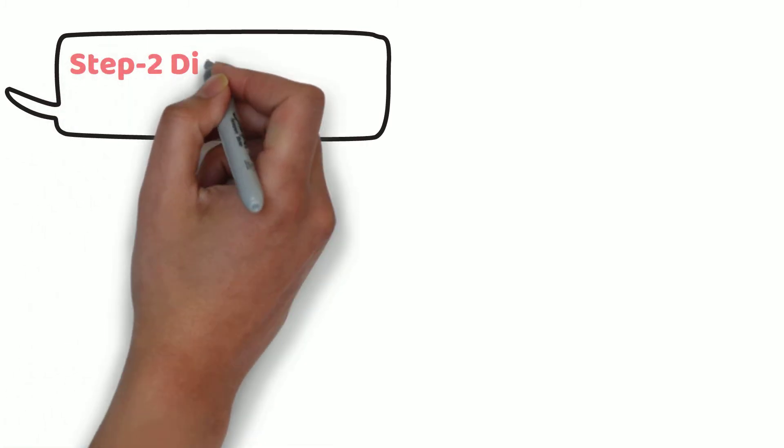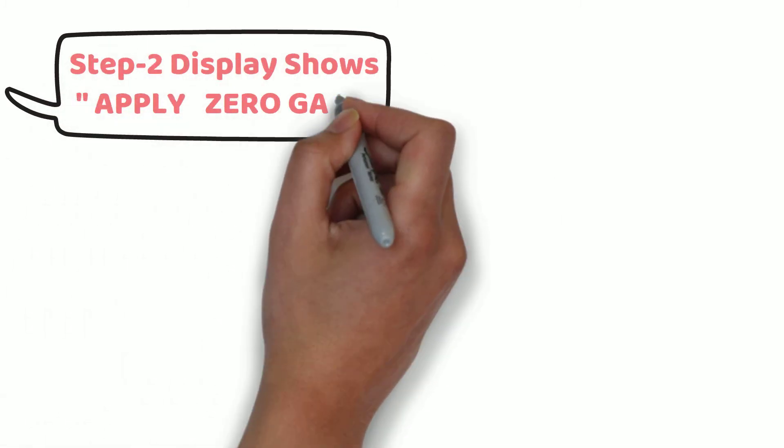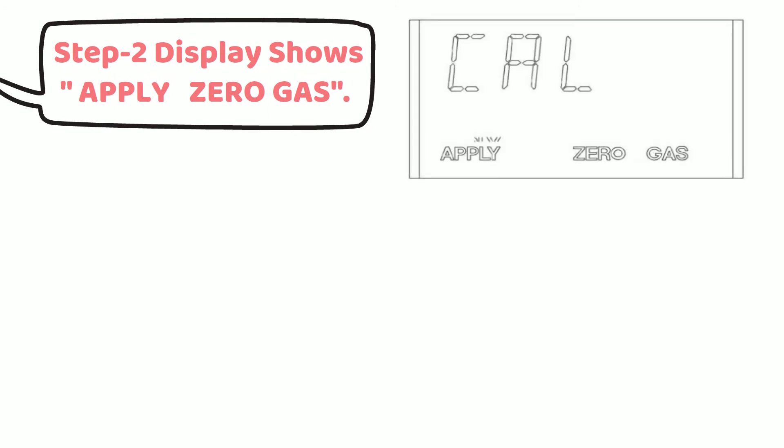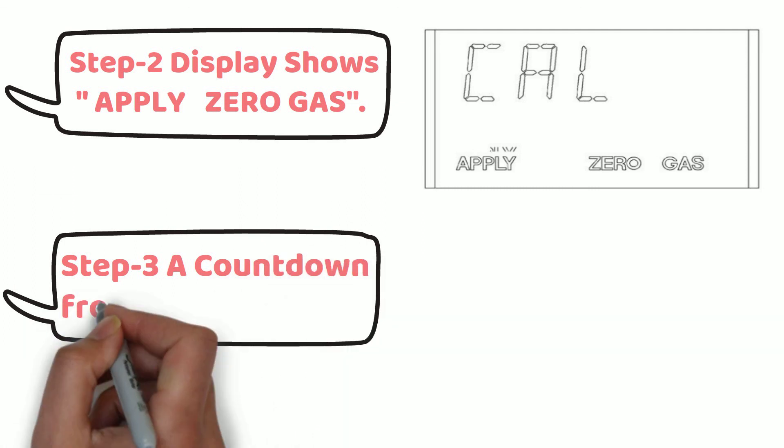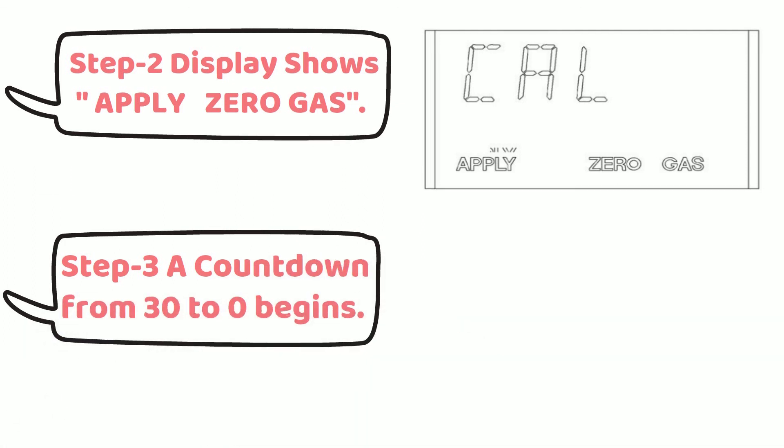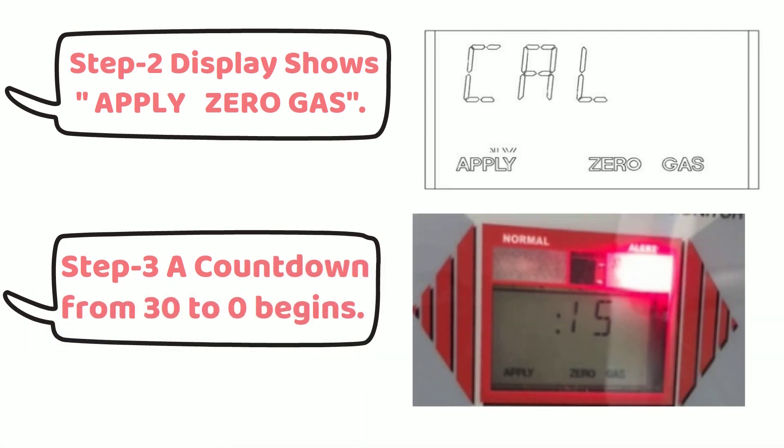You can see apply zero gas on controller display. After this, countdown from 30 to zero begins. Zero gas is not required if there is no gases presence in atmosphere where sensor is located. In this situation, zero calibration can be done in open to air. If there is some gases presence in atmosphere, then zero gas is required for zero calibration.